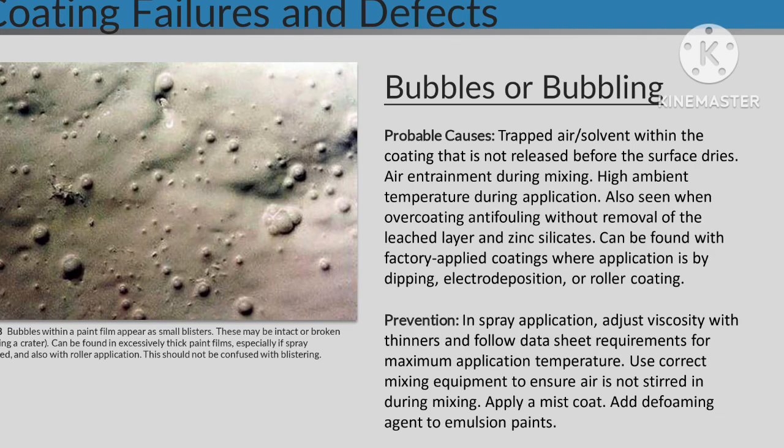Bubbles or Bubbling. Probable causes: trapped air or solvent within the coating that is not released before the surface dries. Air entrainment during mixing, high ambient temperature during application. Also seen when overcoating antifouling without removal of the leached layer, and with zinc silicates. Can be found with factory applied coatings where application is by dipping, electro deposition, or roller coating. Prevention: in spray application, adjust viscosity with thinners and follow data sheet requirements for maximum application temperature. Use correct mixing equipment to ensure air is not stirred in during mixing. Apply a mist coat and add defoaming agent to emulsion paints.